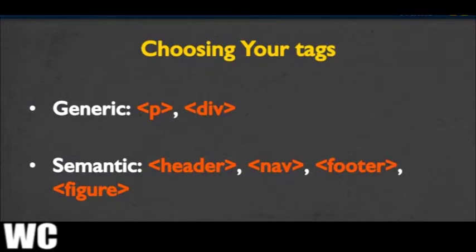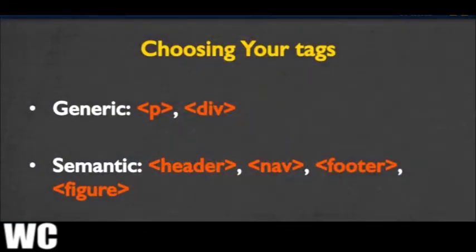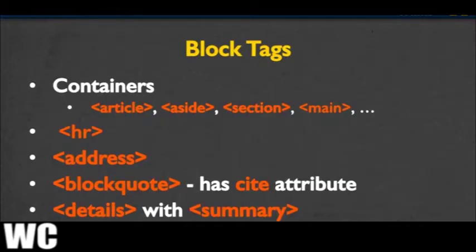One of the first things you need to decide when you're coding is which tags are you going to use. There are the generic kind of what we call block tags, paragraph and div, that break your code into nice sections. Paragraph is kind of self-explanatory and div gives you a way to put groups of content together. But the problem with both div and paragraph is that they're very generic. So we want to move over to the idea of using semantic tags such as header and nav, footer and figure, which we talked about in an earlier video. Some of the other block tags that you may not be familiar with are containers - simple things where you can put like-minded code together, such as article, aside, section, and main. They almost seem generic in their names, but as you grow more comfortable designing your website, you can start to see: this isn't a generic section, this really is an aside.